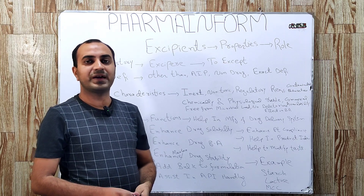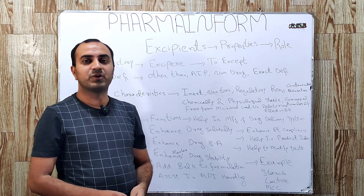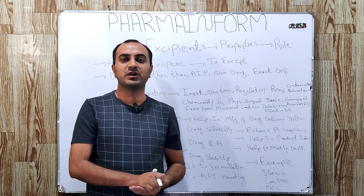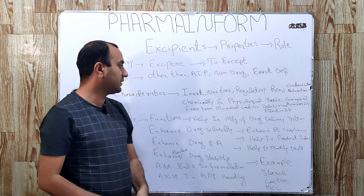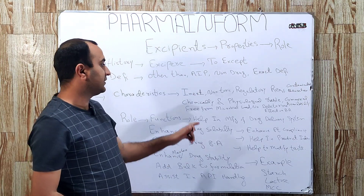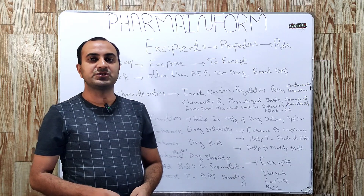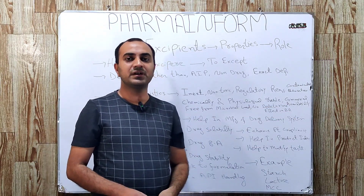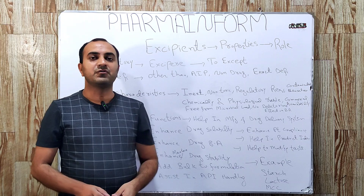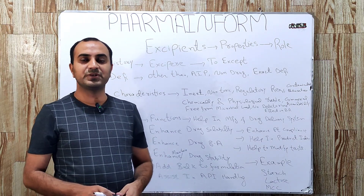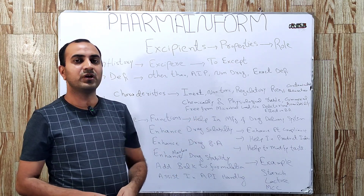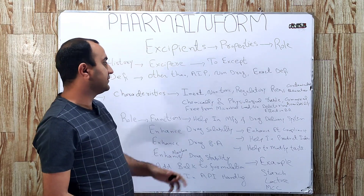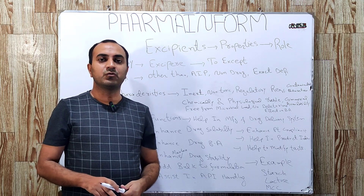The excipient must not be contaminated by itself — for example, sucrose — or by any of its own components. The excipient must also be chemically and physically stable, must be cost-effective and easily commercially available. Additionally, the excipient must be free from microbial load and must not have any deleterious effect on drug bioavailability. These are the basic properties of a good excipient.